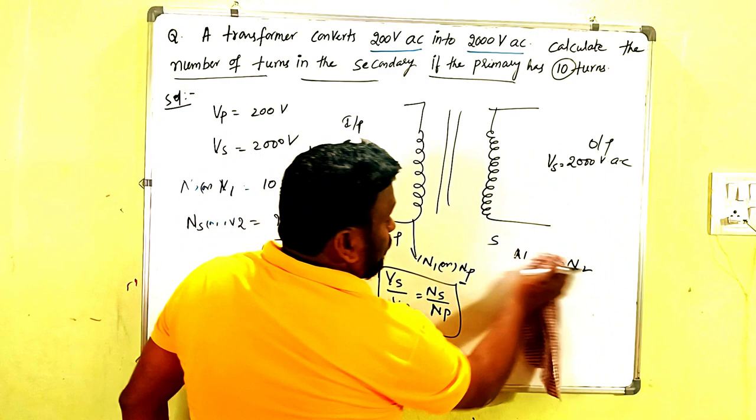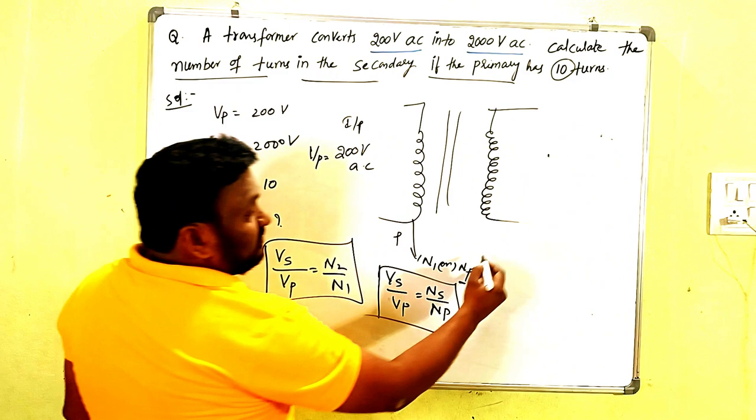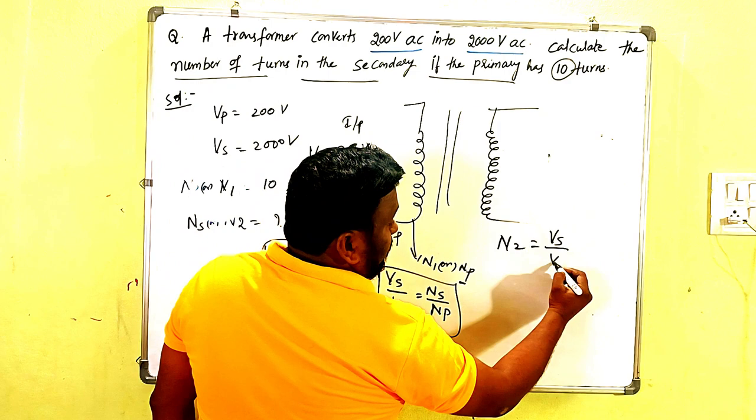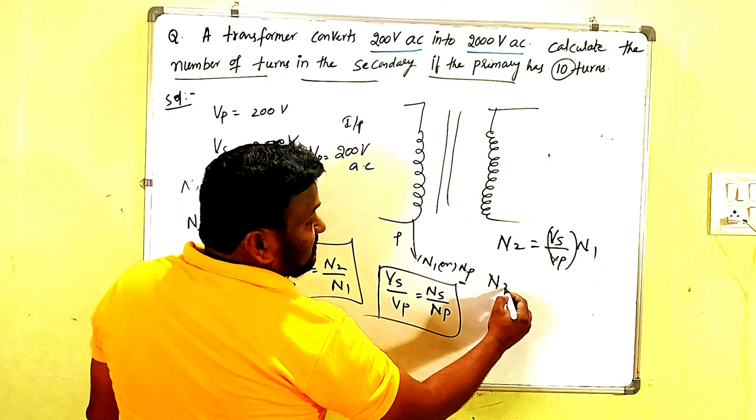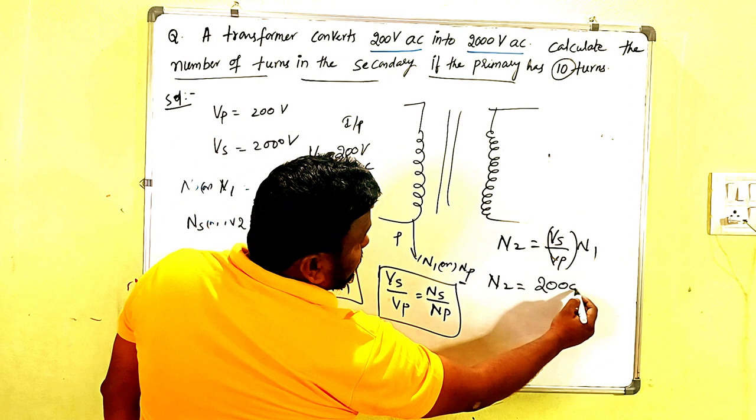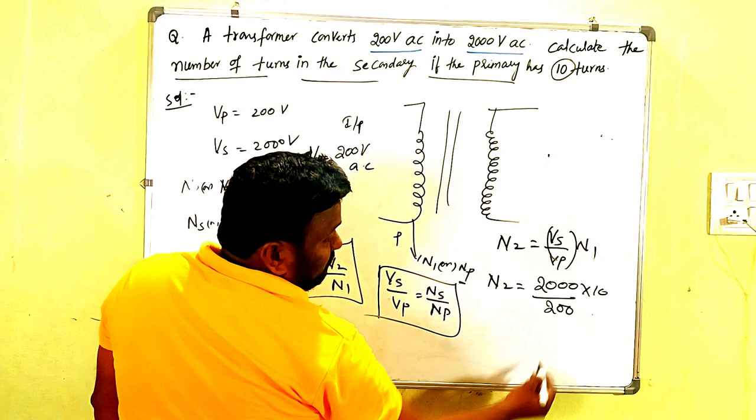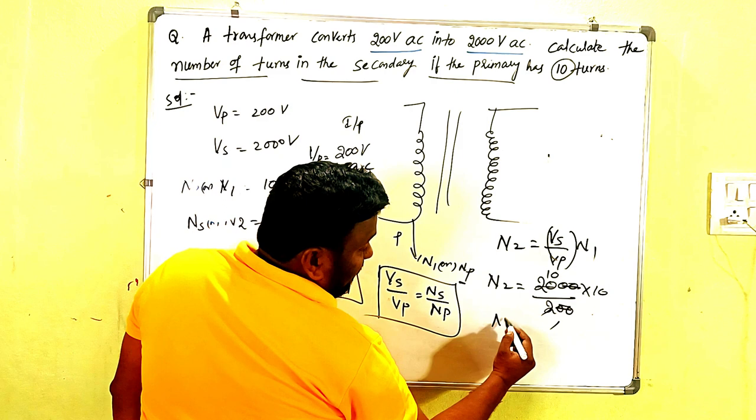Now we have to substitute values in that one. Very simple. N2 is equals to Vs by Vp into N1. Then obviously here N2 is equals to, what is Vs? 2000 volts. 2000 by Vp, which is 200, times N1, which is 10.